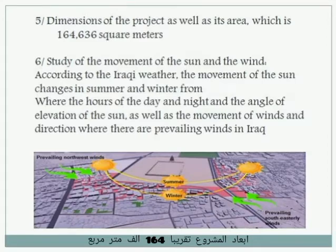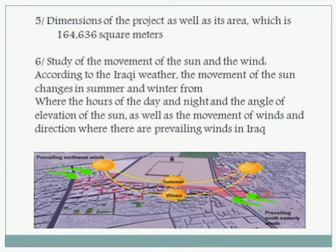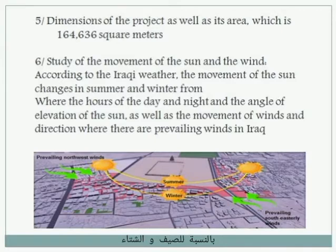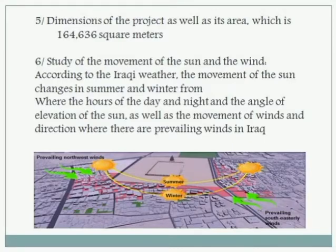If we study the sun and weather for this location — the movement of the sun and winds according to Iraqi weather — the movement of the sun changes between summer and winter, and the hours of wind and direction show where the winds are in Iraq.